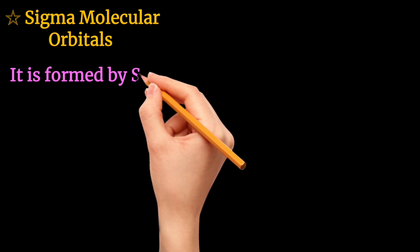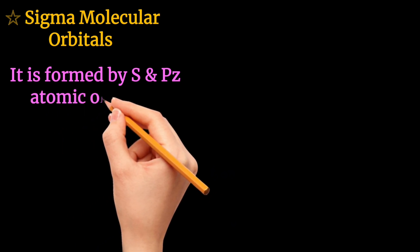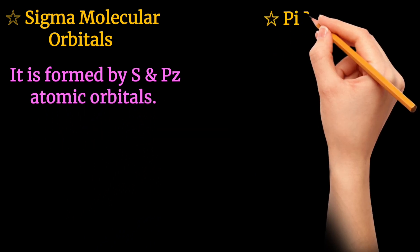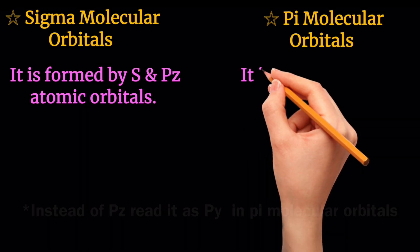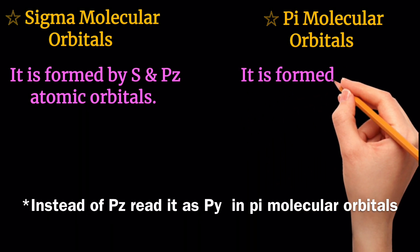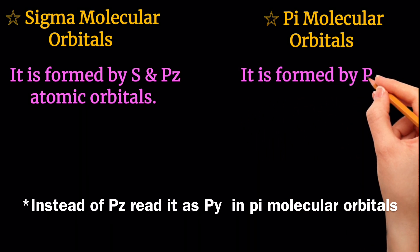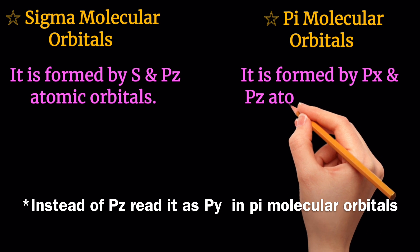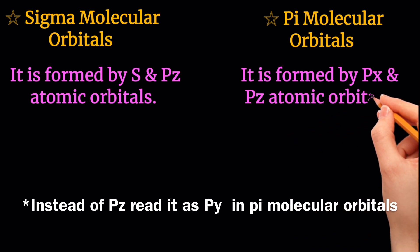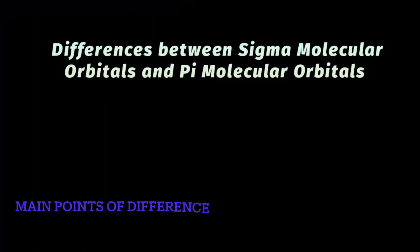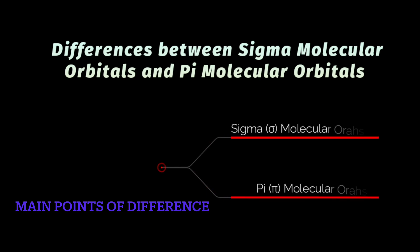Generally, sigma molecular orbitals are formed by s and pz atomic orbitals, while pi molecular orbitals are formed by px and py atomic orbitals. These are the main points of difference studied in this lecture.